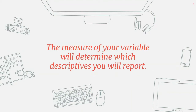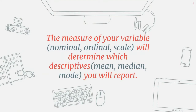For example, age can be reported differently depending upon how it is measured. You can't just say 'whenever I have age it's reported this way' — it always depends on how the data is measured. The level of measurement is going to matter. The measure of your variable, whether it is nominal, ordinal, or scale, will determine which descriptives — whether we report a mean, a median, or a mode — you will report.